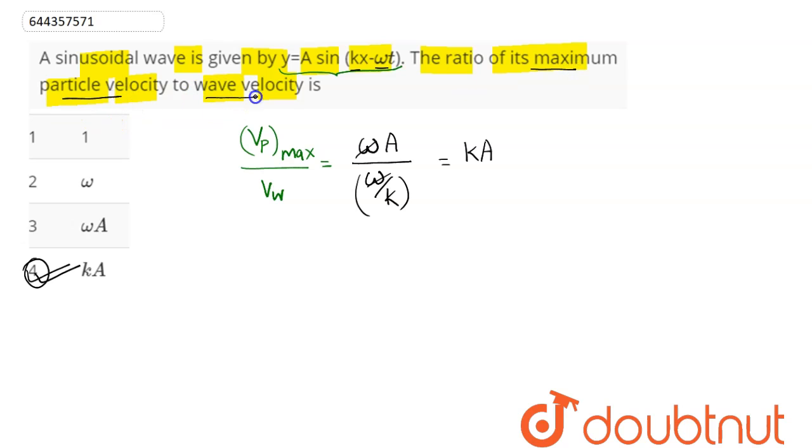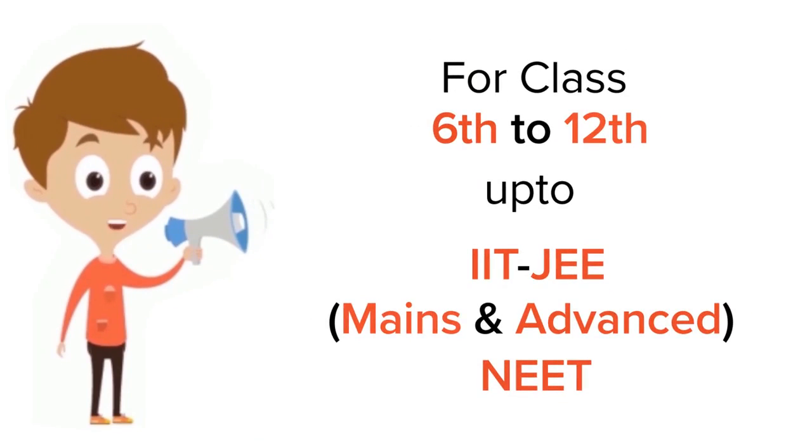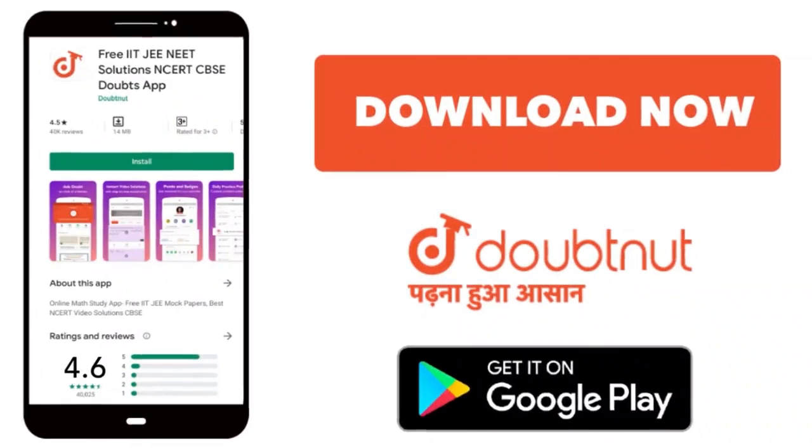the ratio of maximum particle velocity to the wave velocity is kA. Hence, option four is our answer. For class 6 to 12, IIT-JEE and NEET level, trusted by more than 5 crore students, download Doubtnut app today.